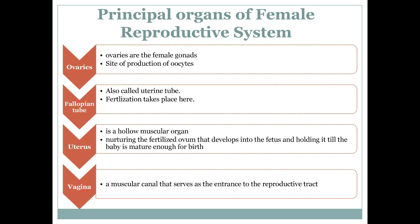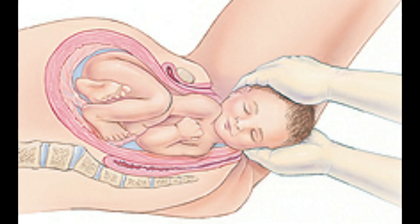After the fallopian tube, the next organ is the uterus, which is a hollow muscular organ. It is muscular because muscles have the property of relaxation and contraction. The uterus not only nurtures the baby but also, at the time of birth, strong uterine contractions help move the baby towards the vagina.